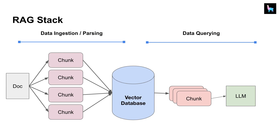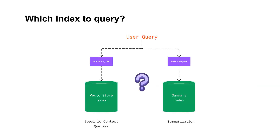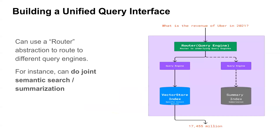Often user queries can be summarization queries, or queries that can be answered with specific context. We have a vector store index to answer specific context queries and a summary index for answering summarization queries. But in the real world we really don't know what type of user query will come, so how do we decide which index or query engine to route a specific user query to?